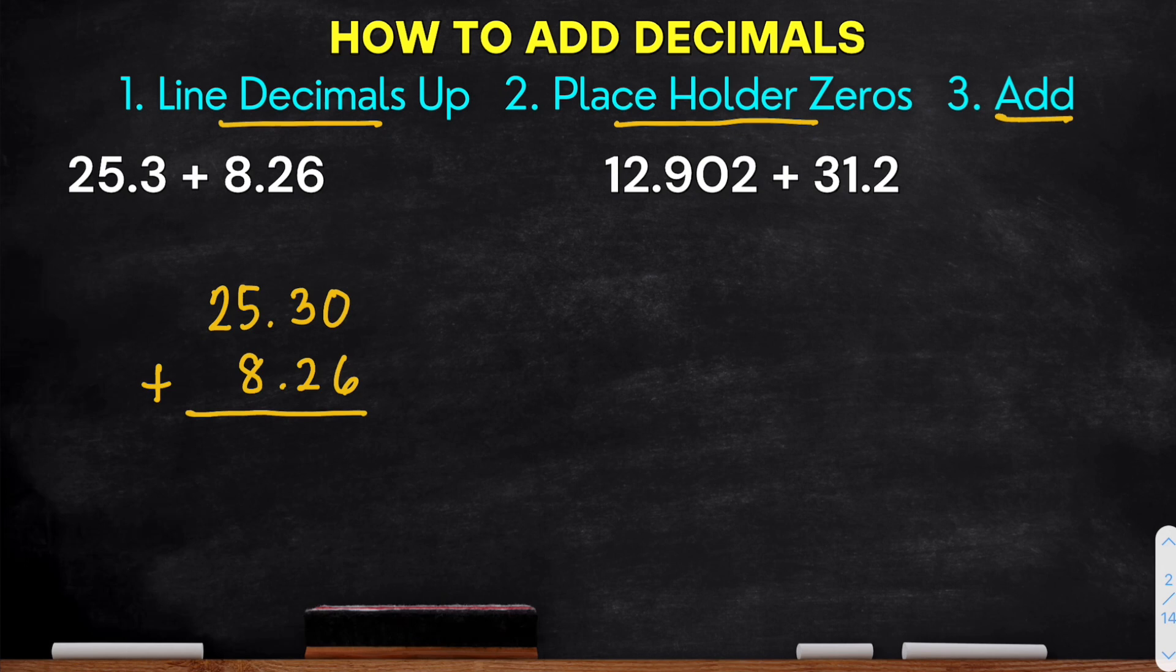So try it. So when we add decimals, we start at the rightmost. Okay, so try it. We have 0 plus 6, we have 6. Followed by 3 plus 2, that is 5. And then place the decimal point.